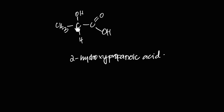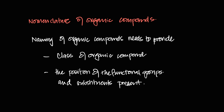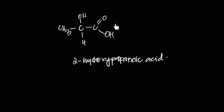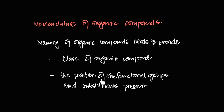The compound naming should include all of this: the class of the compound like acid, alcohol, or whatever else; all the functional groups, not just the main class but also additional ones. For example, here the primary functional group is an acid but it also has an alcohol, so it can behave both as an acid and an alcohol. The name should also include the position of functional groups and substituents like methyl, halogen, and alkyl groups.